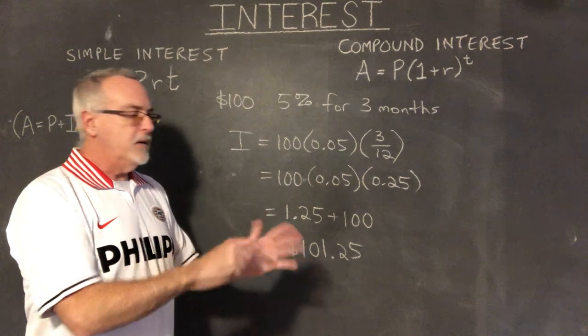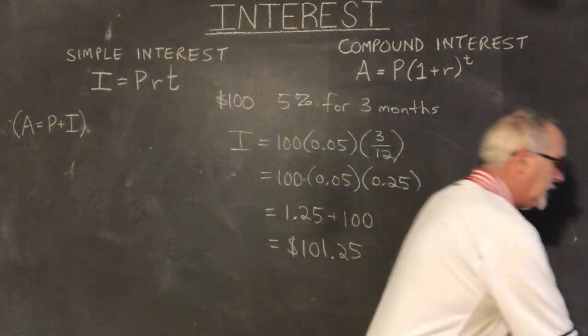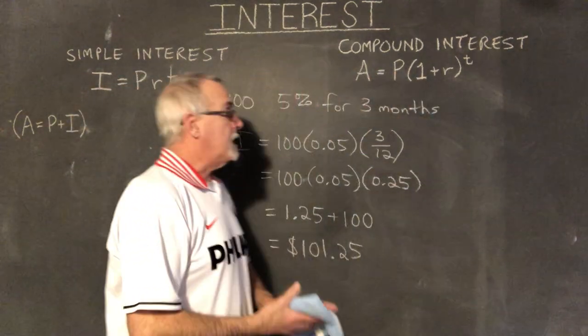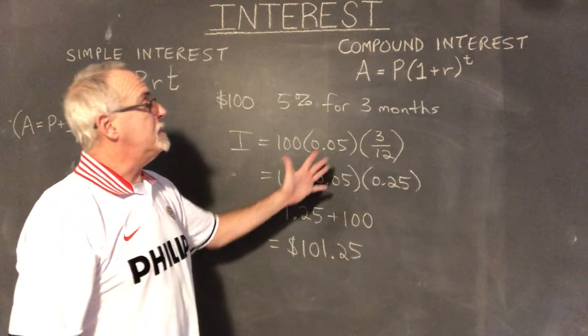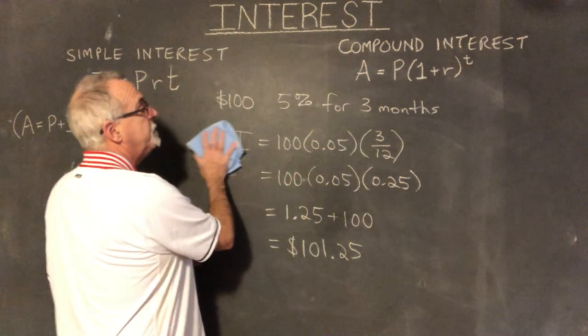When you have a time that's not a whole number of years, we can still handle that simply by converting the months into a decimal — a fraction of a year. And it works out fine.